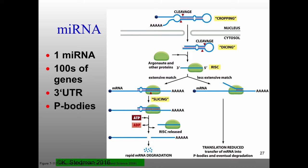If you have a less extensive match — less extensive base pairing between your microRNA and the target — the mRNA won't be degraded. Rather, you simply get reduced translation, and the mRNA is sent to areas in the cell where mRNAs go to die: p-bodies and stress granules. RISC stands for RNA-induced silencing complex — I should have mentioned that earlier.